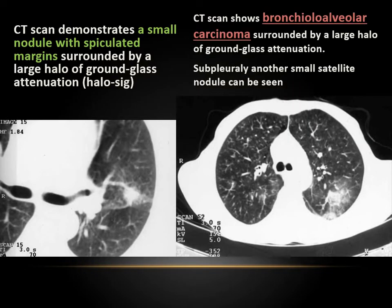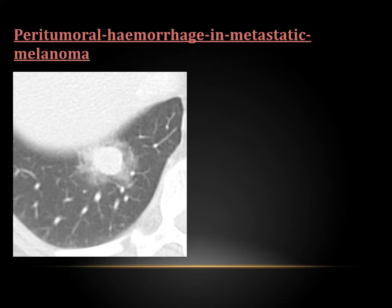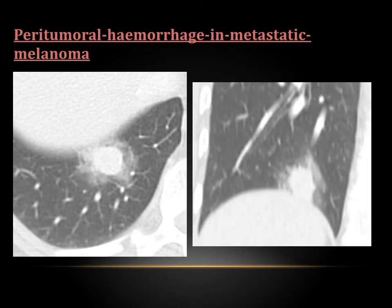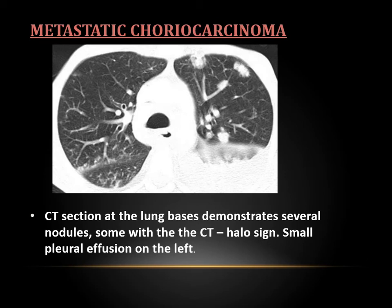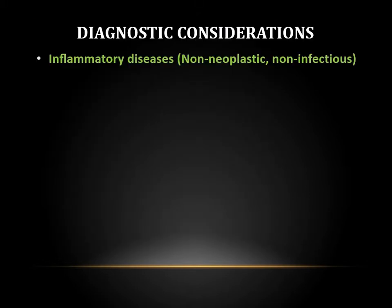This is a case of bronchoalveolar carcinoma showing two nodules — one on the right side is a satellite lesion surrounded by halo sign, and the other side is also surrounded by halo sign. This is a case of non-primary melanoma presenting as a single nodule with halo sign. This is another hemorrhagic case. This is also a case of multiple choriocarcinoma, which can be seen especially anteriorly.